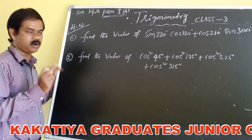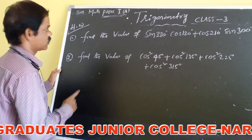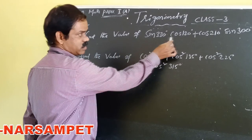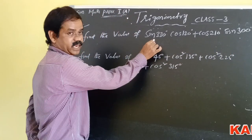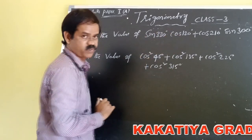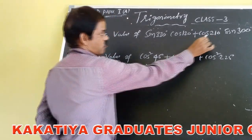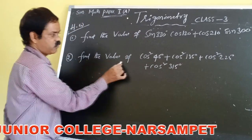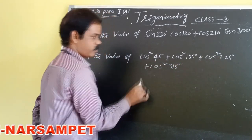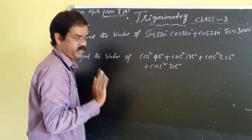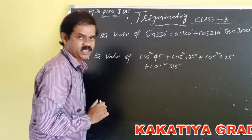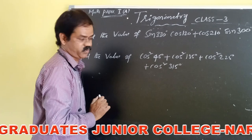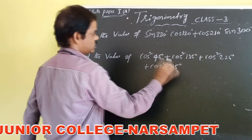By using these all-silver-T (ASTC) basic class concepts. Now find the value of sin 330° cos 120° plus cos 210° sin 300°. Next problem: find the value of cos 135° plus cos 225° plus cos 315°. You can shift 135° as 90° plus 45°, 225° as 270° minus 45°, and 315° as 360° minus 45°. Solve these problems and find the answers.